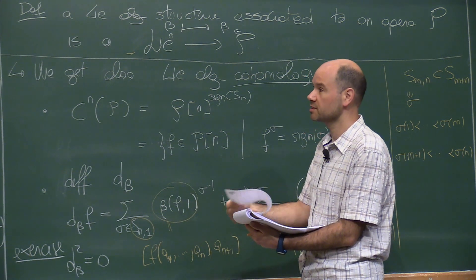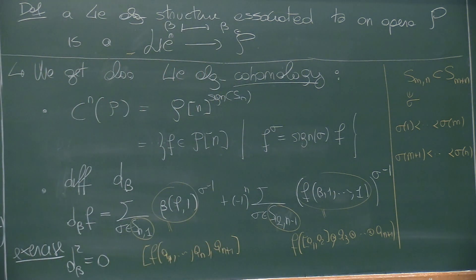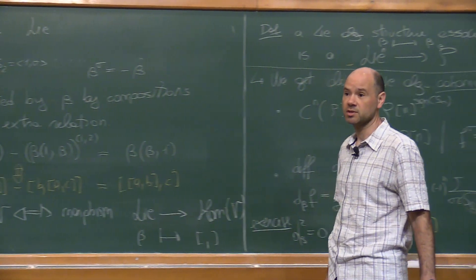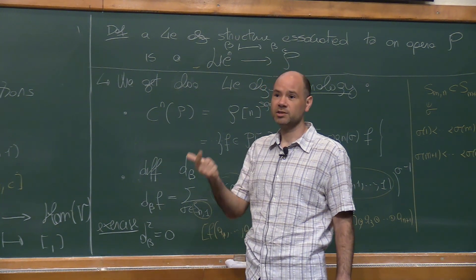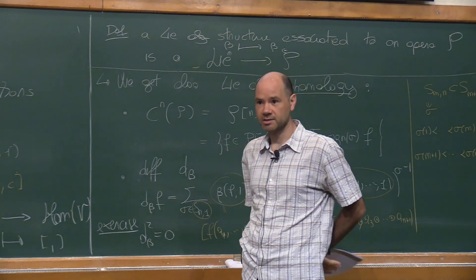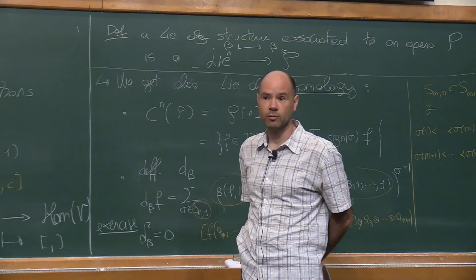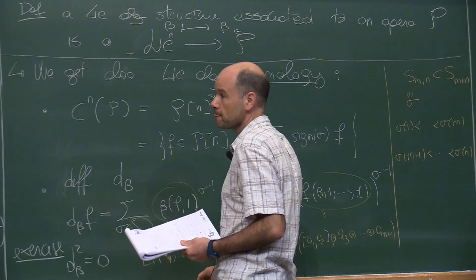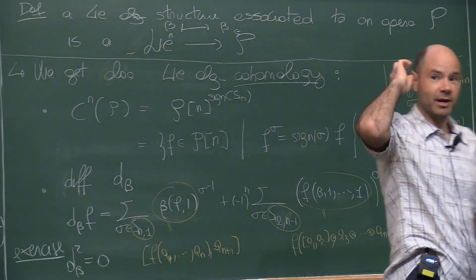What we want to do now is introduce new operads, and for each of them describe the corresponding Lie algebra structures. We will recover in this way the notions of Lie conformal algebras, vertex algebras, and Poisson vertex algebras, and doing it this way we get automatically the corresponding cohomology theories.